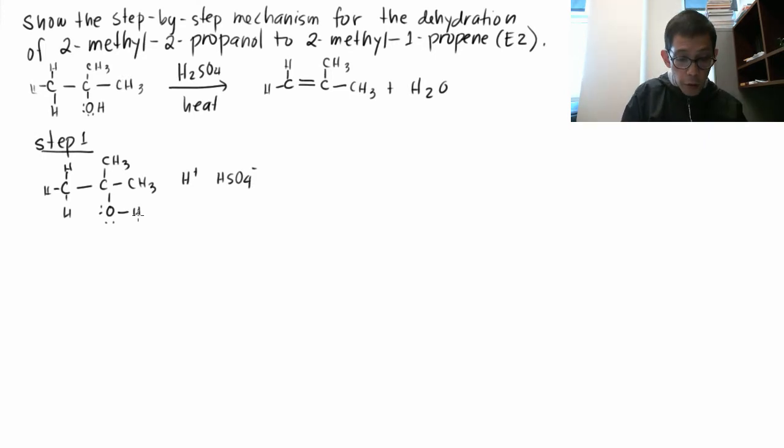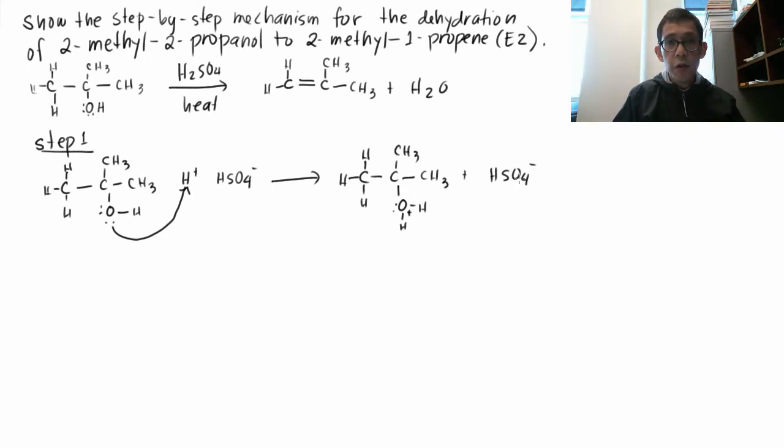So one of the lone pairs on the oxygen grabs the H+, and you get this C, H, H, H, CH3. Now on the OH, you have two Hs attached and a lone pair. So now you have a plus charge on the oxygen, okay? And you still have the HSO4-. So the minus charge is on the HSO4. The plus charge is on the oxygen of your alcohol.